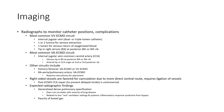Imaging: radiographs to monitor catheter corrosion application. Most common VVICMO — internative jugular vein. 1 or 2 lumen for venous extraction. 1 lumen for venous return of oxygenated blood. Cheap in the right atrium at posterior 8 or 9 ribs.